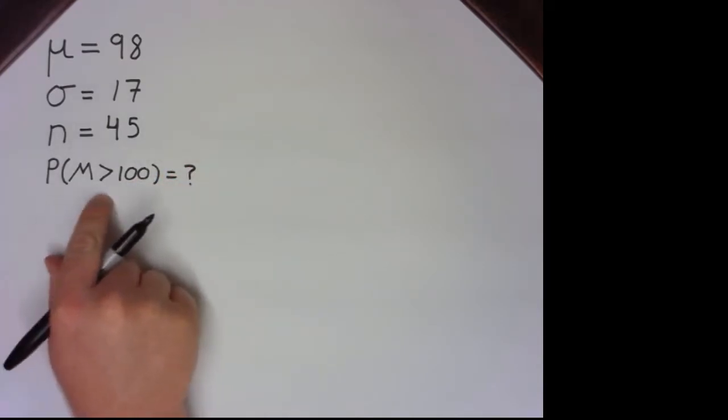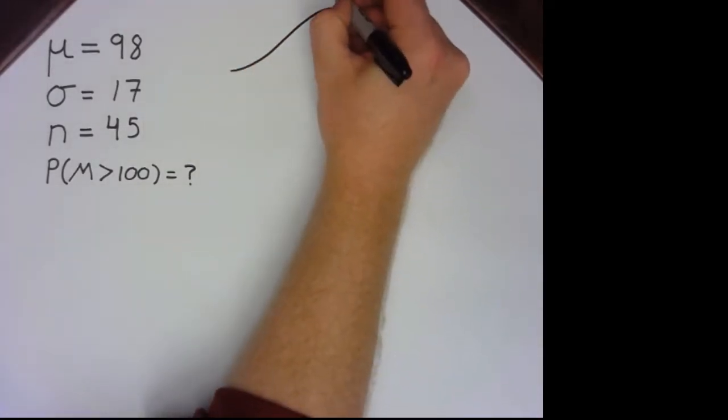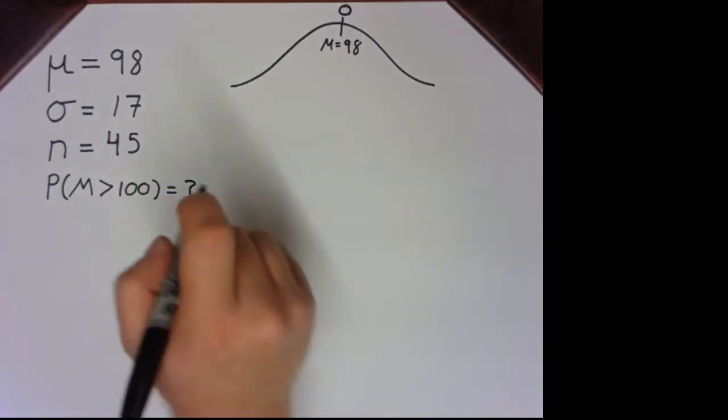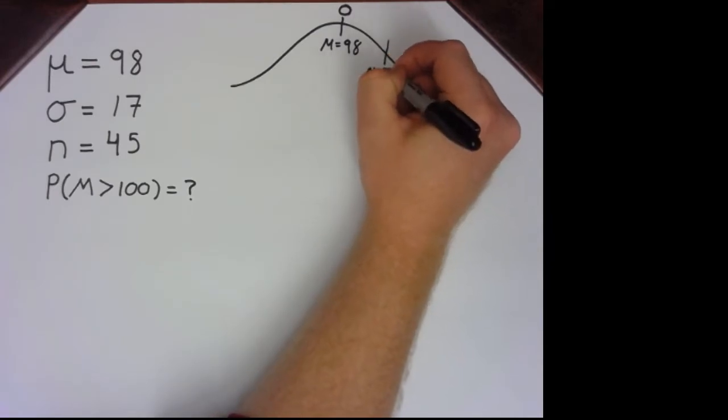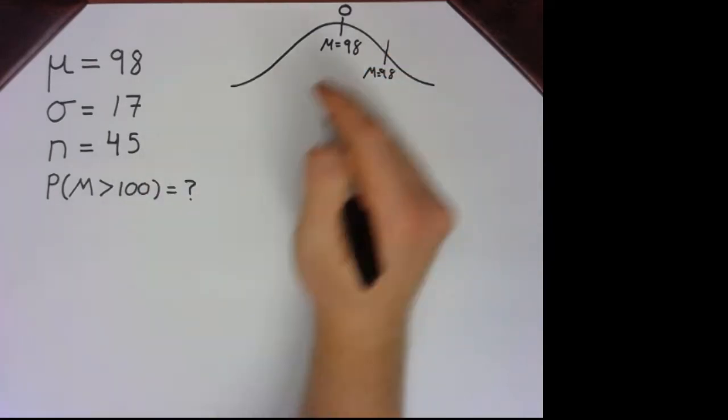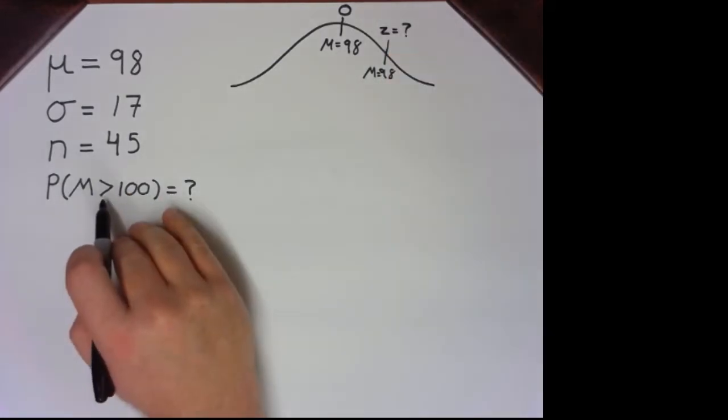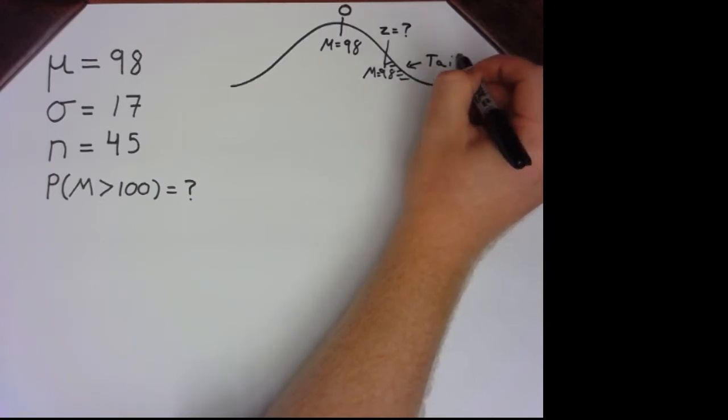So we know to do this, it's another z-score problem. So sketch out that distribution. We know that the population mean is going to have a z-score of 0 and a value of 98. And then we know our sample mean, which is 100, is a z-score that we don't know yet. And we need the area greater than that mean, which would be to the right of it, and would be the tail of this distribution.